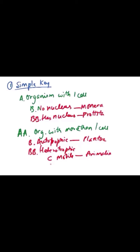I'm giving you an example — Monera and Protista. You check first: does this organism have only one cell? If yes, then check if it has a nucleus. If it has one cell and no nucleus, it goes into Monera. If it has one cell and has a nucleus, it goes into Protista.